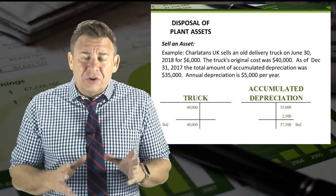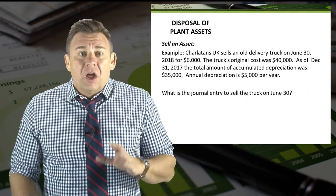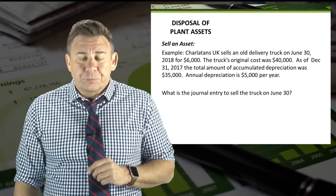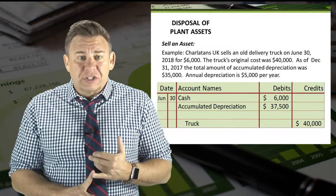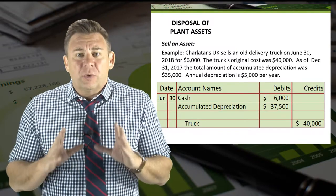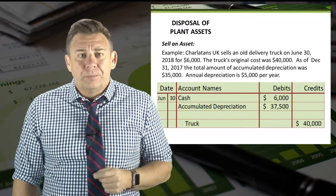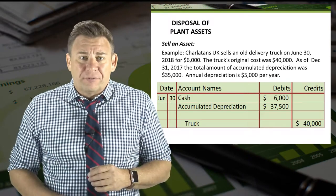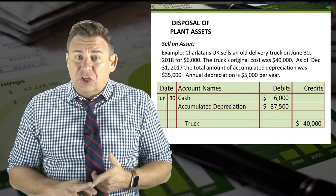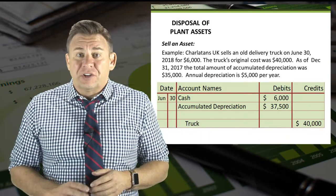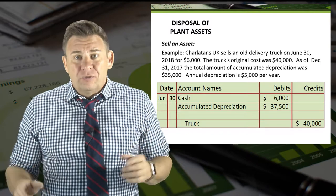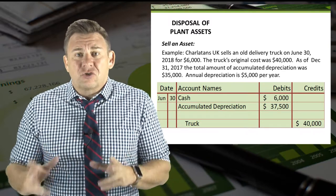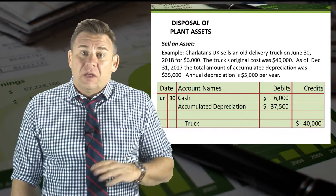Once that journal entry is posted, the new up-to-date balance in accumulated depreciation is $37,500. Now let's record the journal entry to sell this asset on June 30th. Starting with what we know: we debit cash for $6,000 — the amount the truck was sold for. We also debit accumulated depreciation for its balance of $37,500, which removes accumulated depreciation from the books.